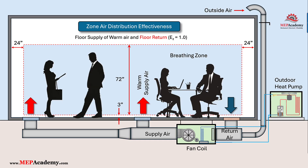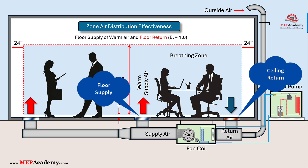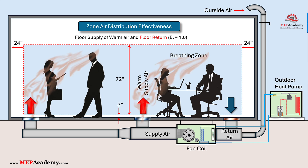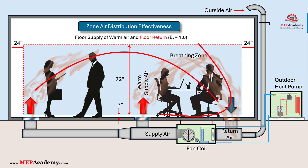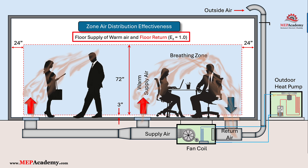The Zone Air Distribution Effectiveness (EZ) is a factor used in ASHRAE 62.1 to account for how efficiently an HVAC system delivers and mixes outdoor air within a given space or zone. It reflects how well the ventilation air is distributed to the occupants' breathing zone, impacting the amount of fresh air needed for adequate ventilation. The effectiveness varies based on how air is supplied and returned, considering factors like supply air temperature and system design. For floor supply with floor return in heating mode, ASHRAE indicates an EZ of 1.0, meaning the value does not add or subtract CFM from the previous calculations.